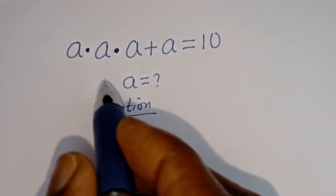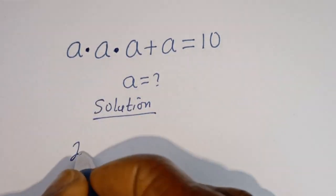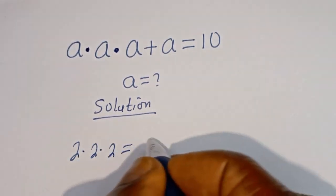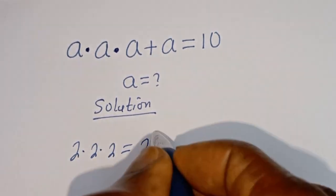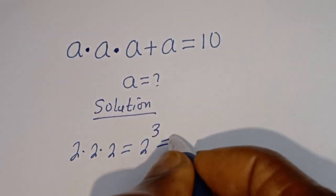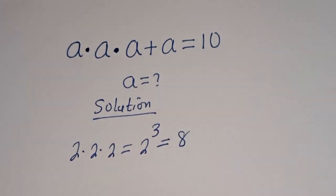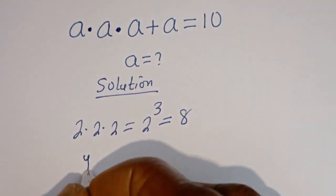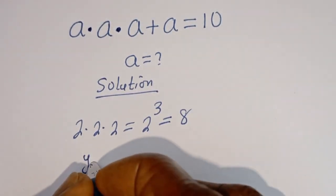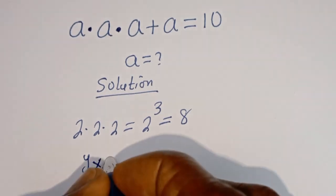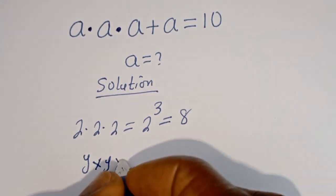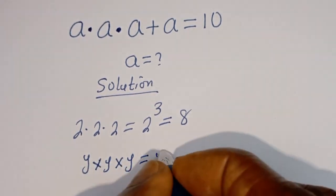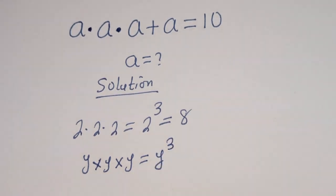Take note of this: if you have 2 multiplied by 2 multiplied by 2, this is equal to 2 to the power of 3, which is equal to 8. Then if you have Y multiplied by Y multiplied by Y, this is equal to Y to the power of 3.